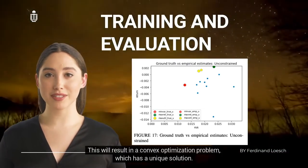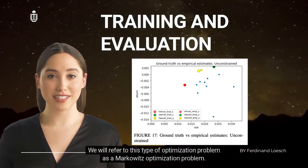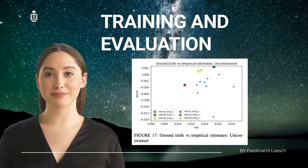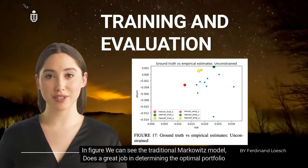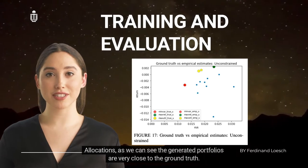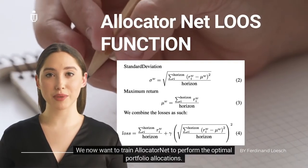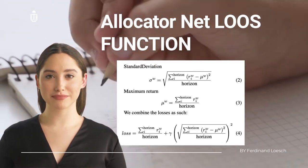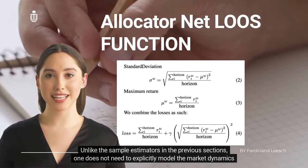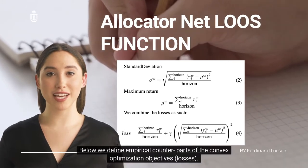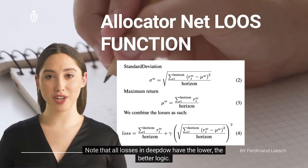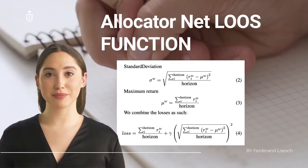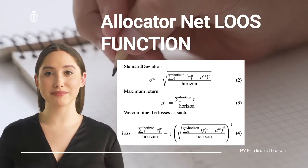We use CVX to find the convex optimization solution numerically, referred to as a Markowitz optimization problem. The objectives considered are maximum return, minimum variance, and maximum utility. The traditional Markowitz model does a great job determining optimal portfolio allocations with generated portfolios very close to the ground truth. The main feature of DeepDo is that it only cares about the final allocation that minimizes some function of empirical portfolio returns — one does not need to explicitly model market dynamics. The losses selected aim to both maximize return and minimize standard deviation, following lower-is-better logic.